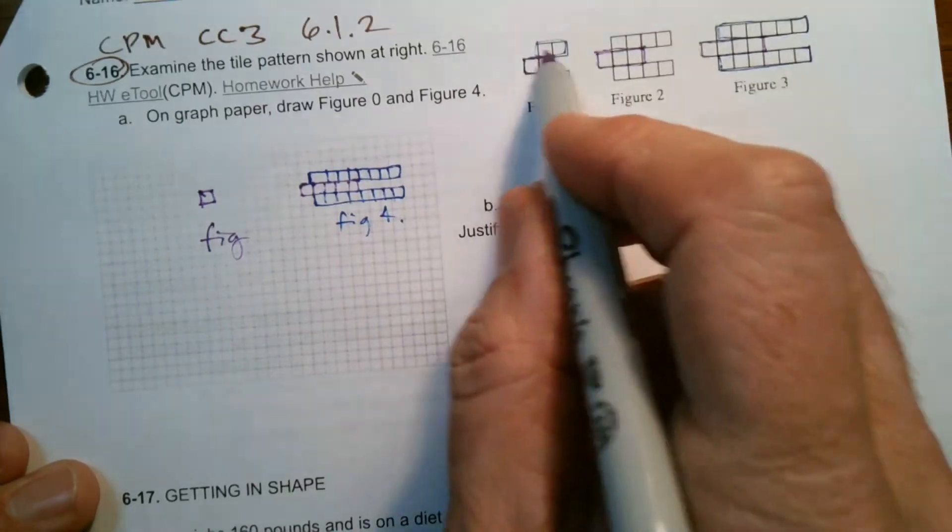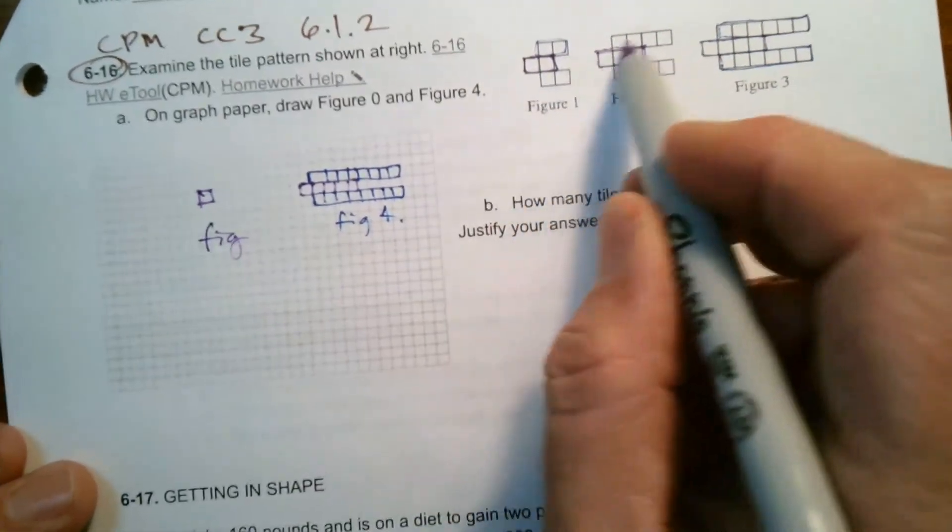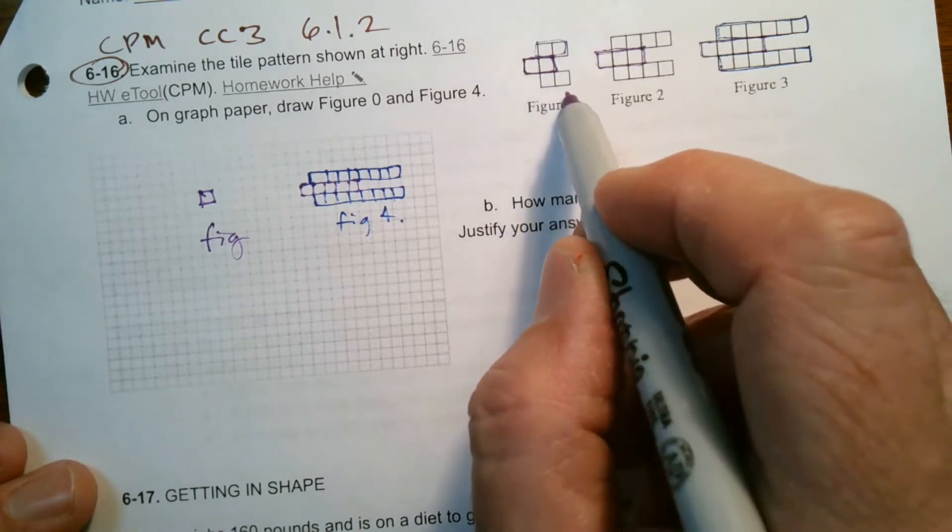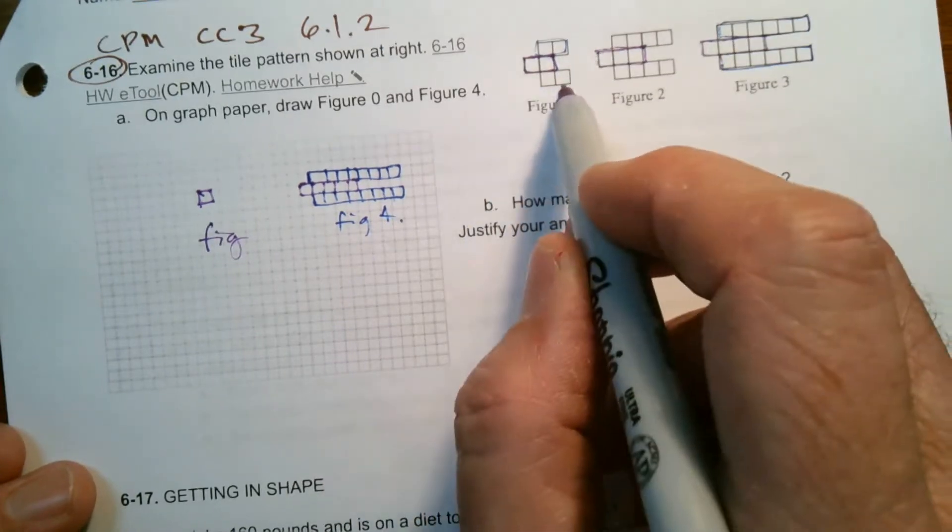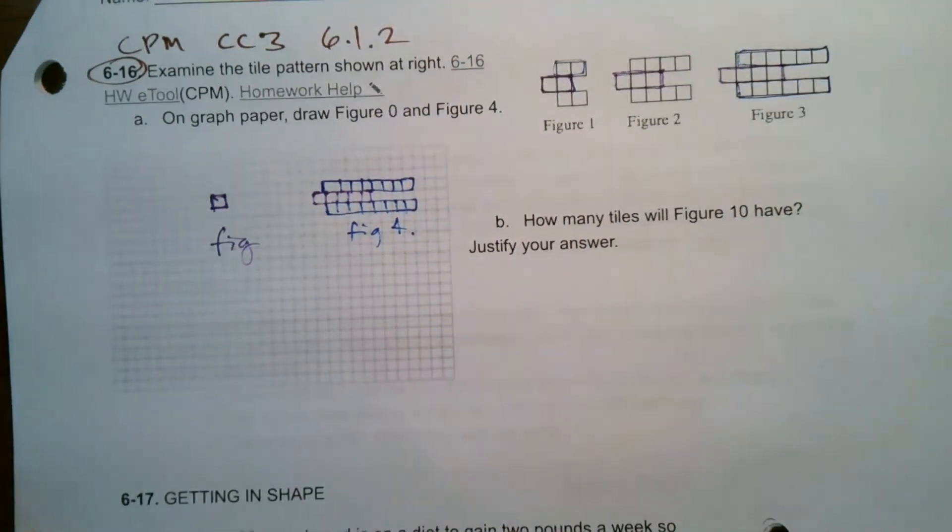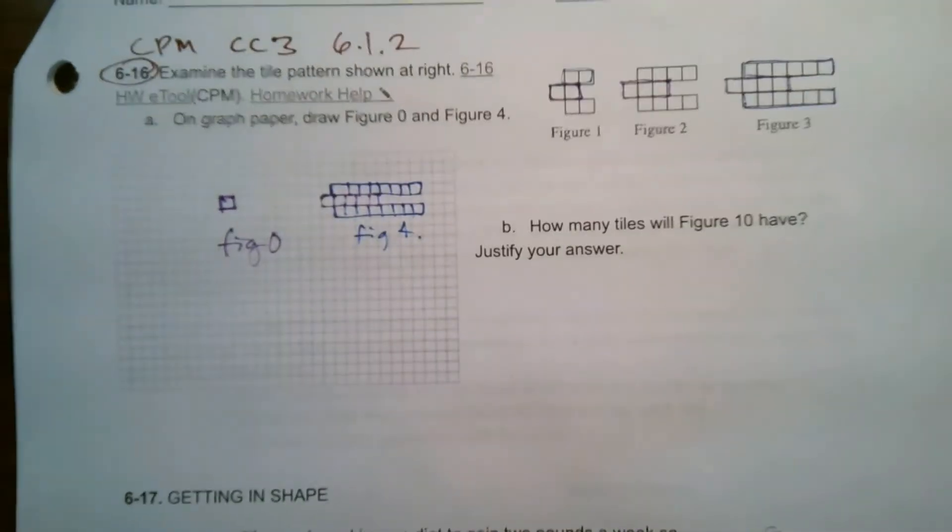And then what about the top and bottom piece? It was always adding by 2 each time, or double. So if I subtracted 2 from top and bottom, there'd be nothing left. So really it's just going to be one figure in the middle. That's it for Figure 0.